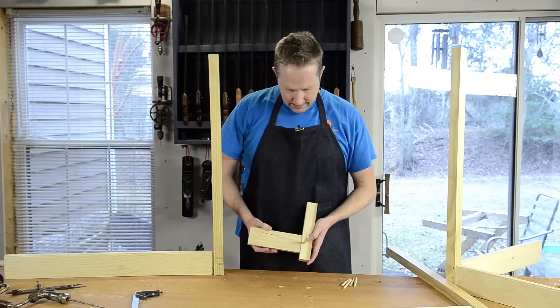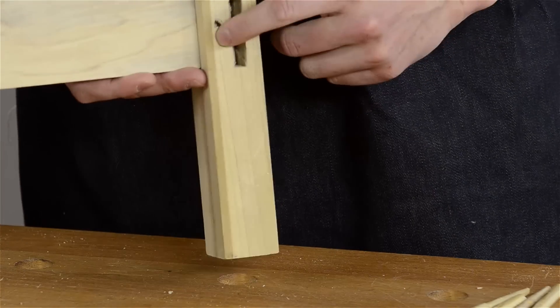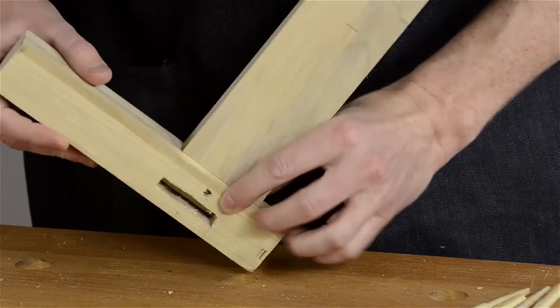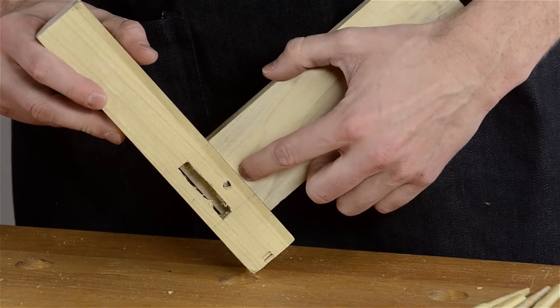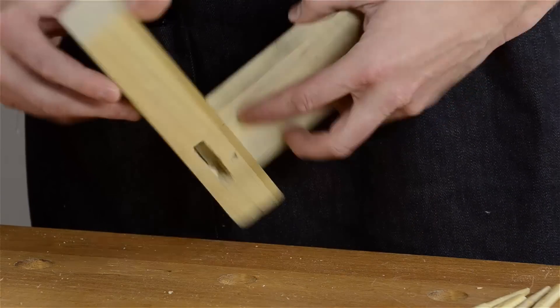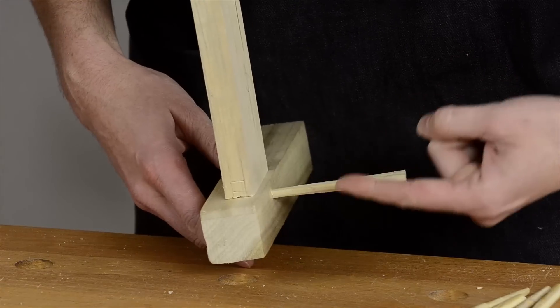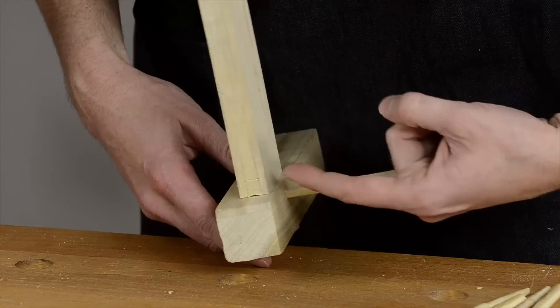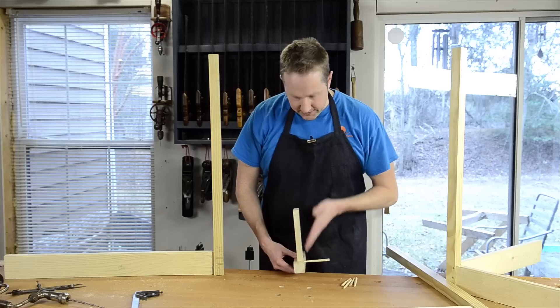A hole is drilled through the mortise and then a separate hole is drilled through the tenon, but it's offset a little bit. So when a pin is driven through, the pin actually has to go out of its way slightly to go through the hole of the tenon, and so it sucks it up really tight.